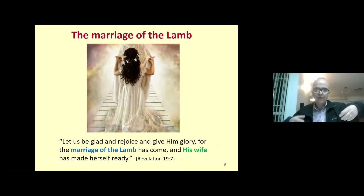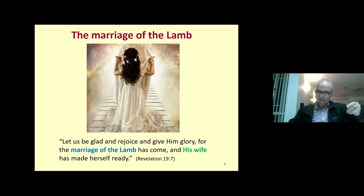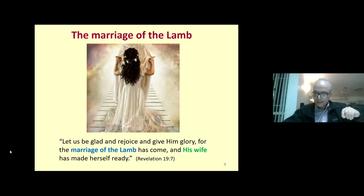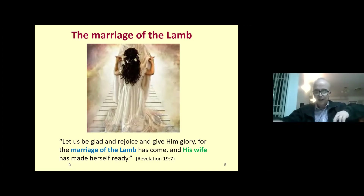In Revelation 19, this theme of a bride for Christ continues. It reads: 'Let us be glad and rejoice, for the marriage of the Lamb has come and his wife has made herself ready.' This is the time when the Lord Jesus Christ returns to the earth, unites with his faithful bride, and allows her to rule the earth with him.